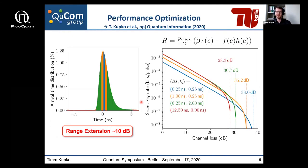To summarize the temporal filtering results: for our system we could achieve a range extension of about 10 dB — from around 18 to 28 dB up to about 38 dB. However, if we are operating in a lower loss regime, it may be more beneficial not to filter as strongly, since there the unfiltered achievable secret key rate is much higher.